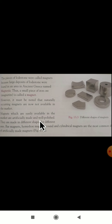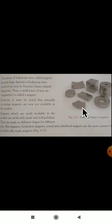Artificial magnets are made in different shapes for different uses. You can observe different shapes of magnets: oval shape, semicircle, cube, cylinder, and circle. Bar magnets, horseshoe magnets, and round and cylindrical magnets are the most common shapes of artificial magnets.